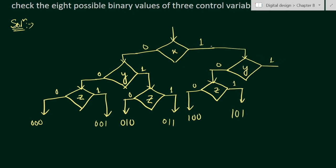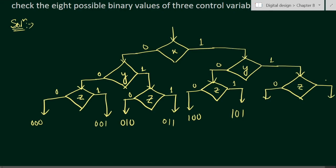For X=1 and Y=1, we add a decision box for Z. When X=1, Y=1, Z=0 we get 110, and when X=1, Y=1, Z=1 the control comes this side giving 111. We have now obtained all eight combinations using the three control variables X, Y, and Z.